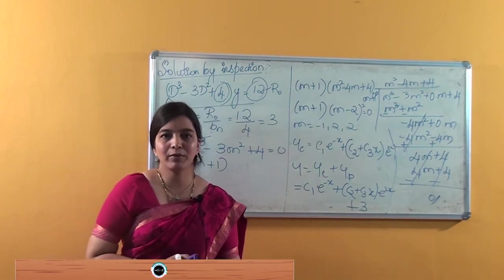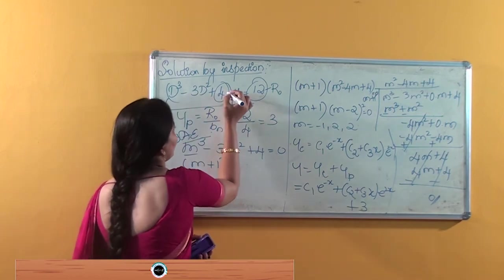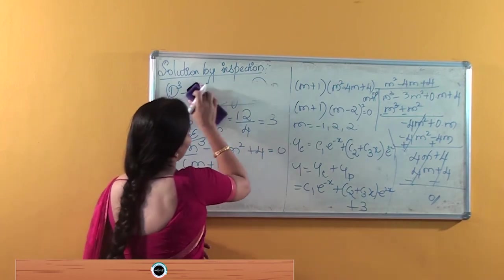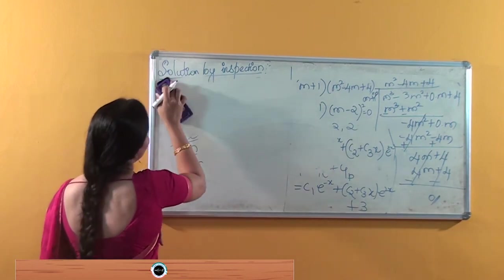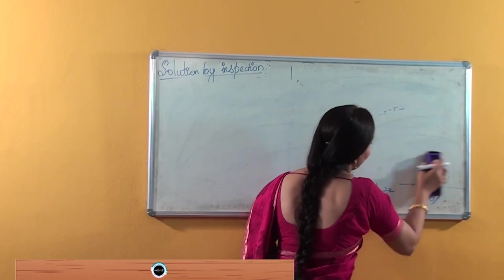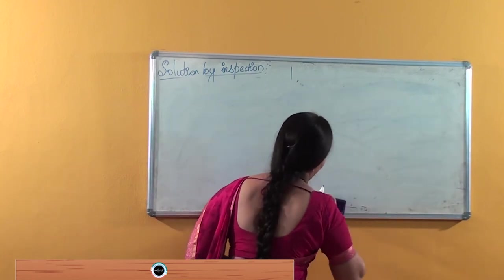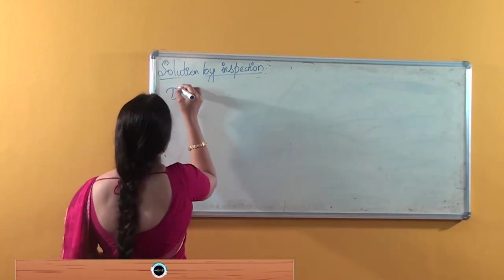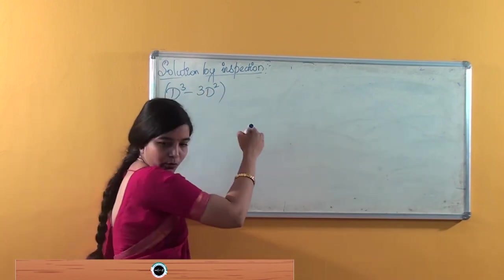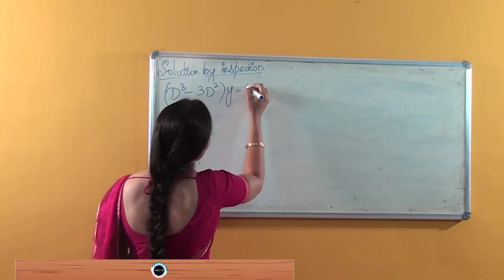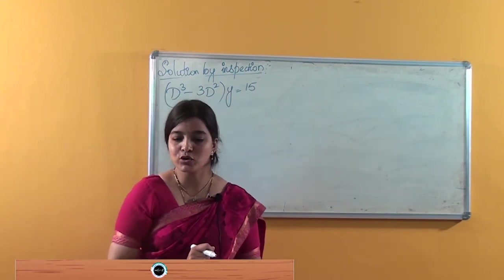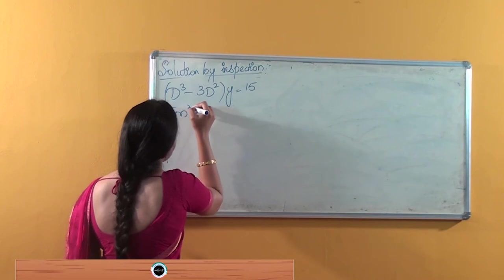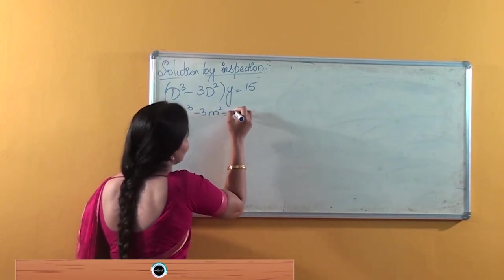I have already mentioned one more method — when the operator term is just D (no constant term). How do we obtain the solution then? By the same inspection method. Consider the question: Solve (D³ - 3D²)y = 50. First, we find the complementary solution.